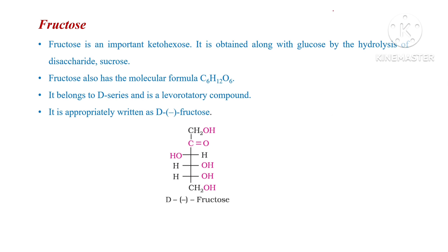Fructose is a keto hexose — 'ketose' means it contains the ketonic functional group, and 'hexose' means it contains a six carbon atom chain. Upon hydrolysis of sucrose, we get one glucose and one fructose. The molecular formula of fructose is C6H12O6. All monosaccharides share the same molecular formula, which is C6H12O6.